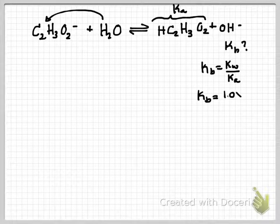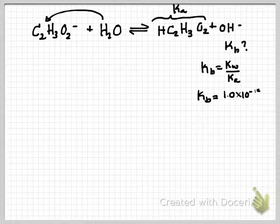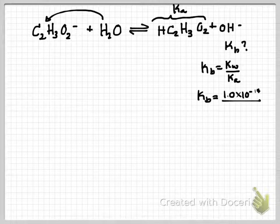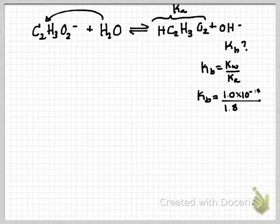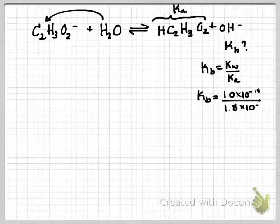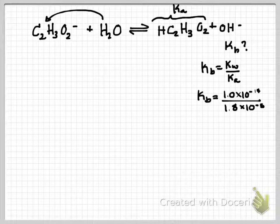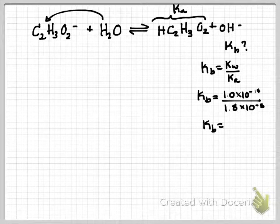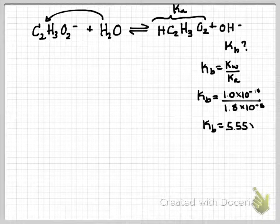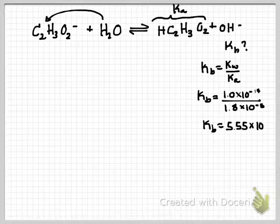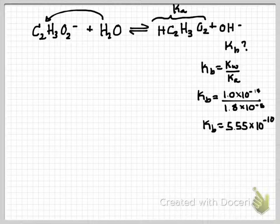And so KB equals 1.0 times 10 to the minus 14. We're going to assume we're at 25 degrees, and you're going to have to do that for a lot of these calculations. And we get a KB value of 5.55 times 10 to the minus 10 for that reaction.